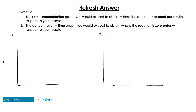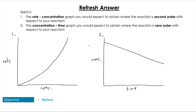With the rate concentration graph, we've got rate on the y-axis and concentration on the x-axis. For the concentration time graph, we've got concentration on y and time on x. For a second order reaction, the rate concentration graph shows an upward curve. For the zero order reaction, the concentration time graph has a straight downward line and that decreasing half-life we discussed last lesson.